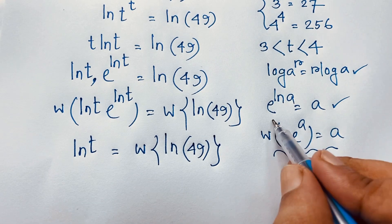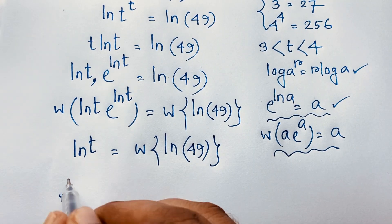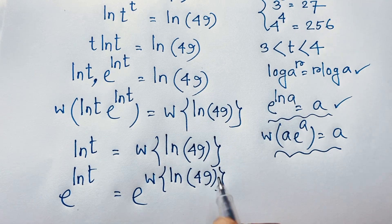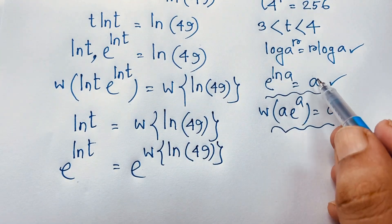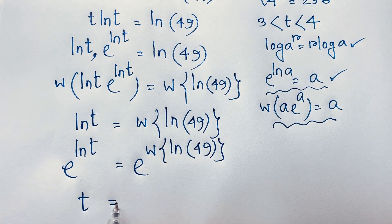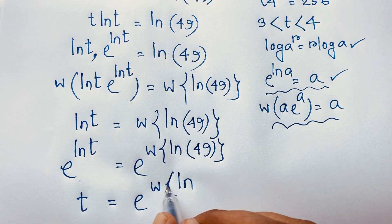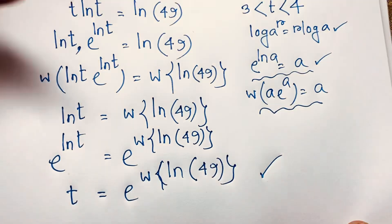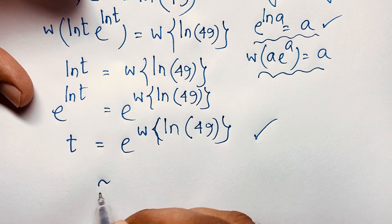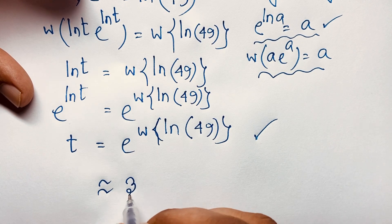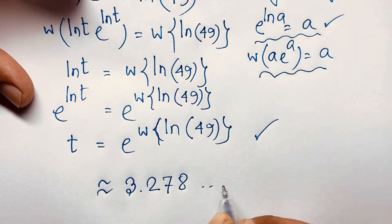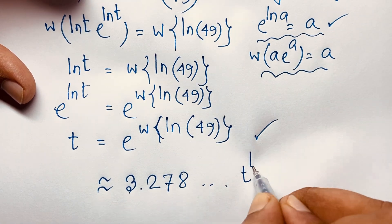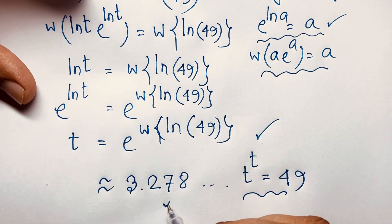Now, t is equal to what? Applying e to both sides — e to the power ln(t) equals e to the power W(ln 49) — and since e^(ln(t)) = t, our final answer is t = e to the power W(ln 49). Using a calculator, this value is approximately 3.278. This is our final answer for the exponential problem t to the power t equals 49.